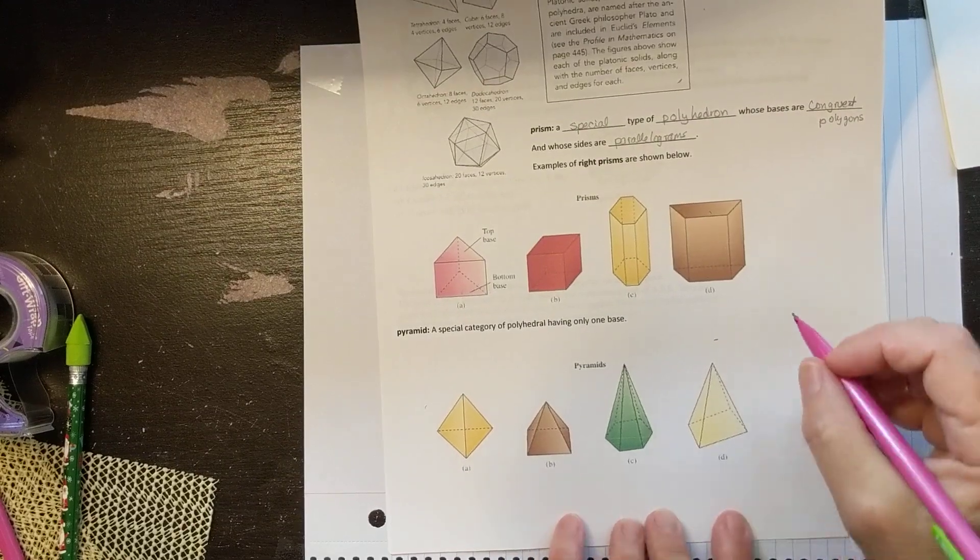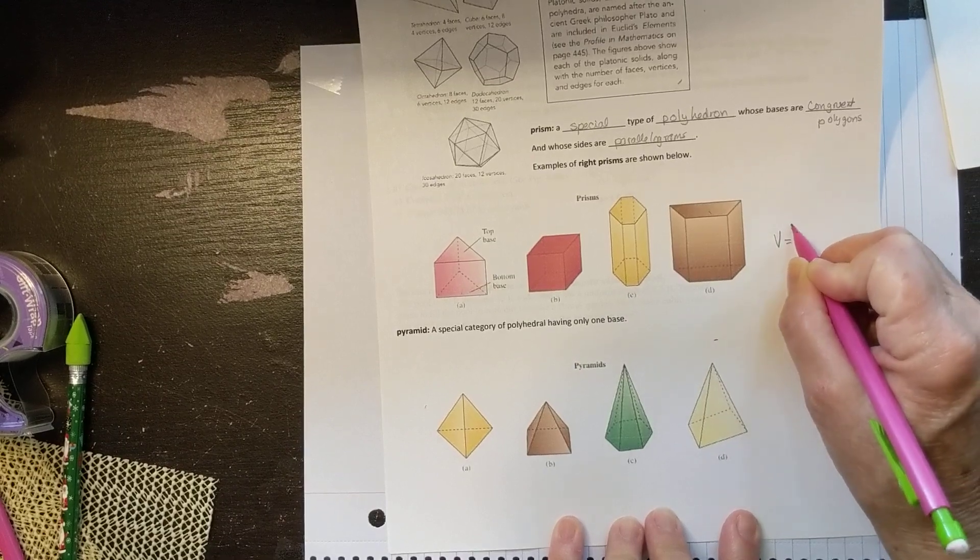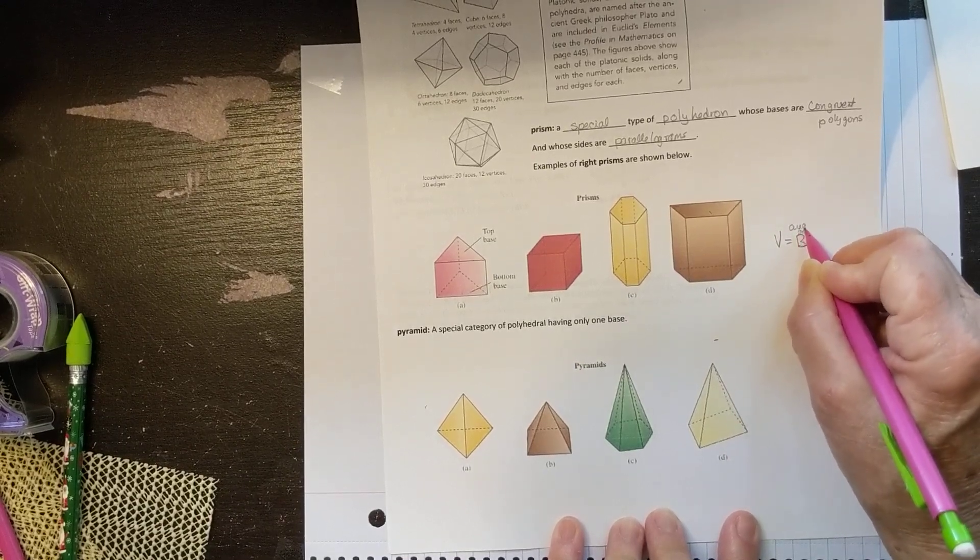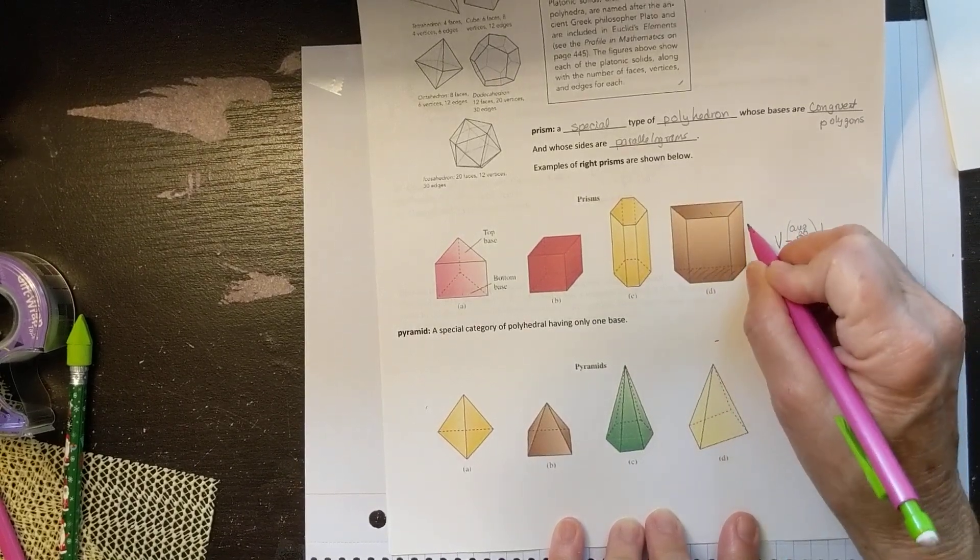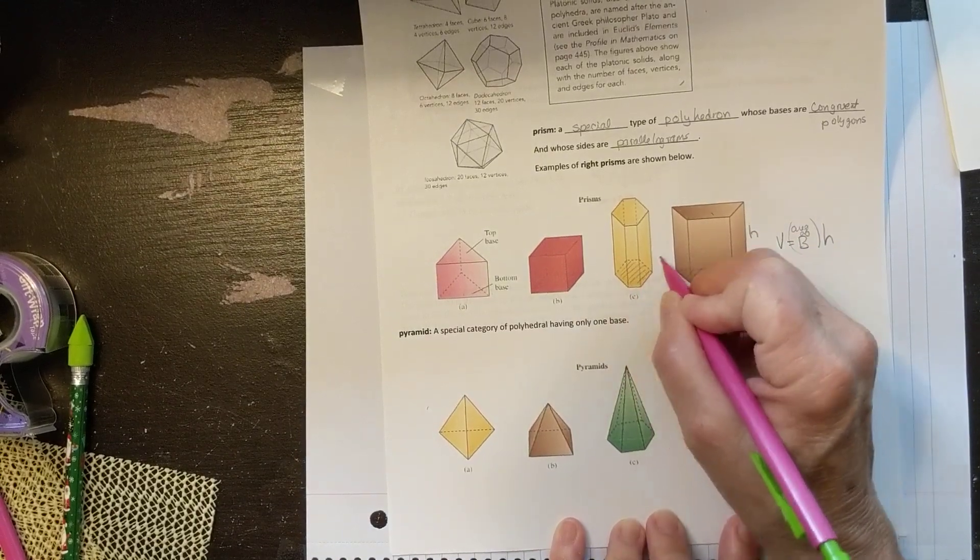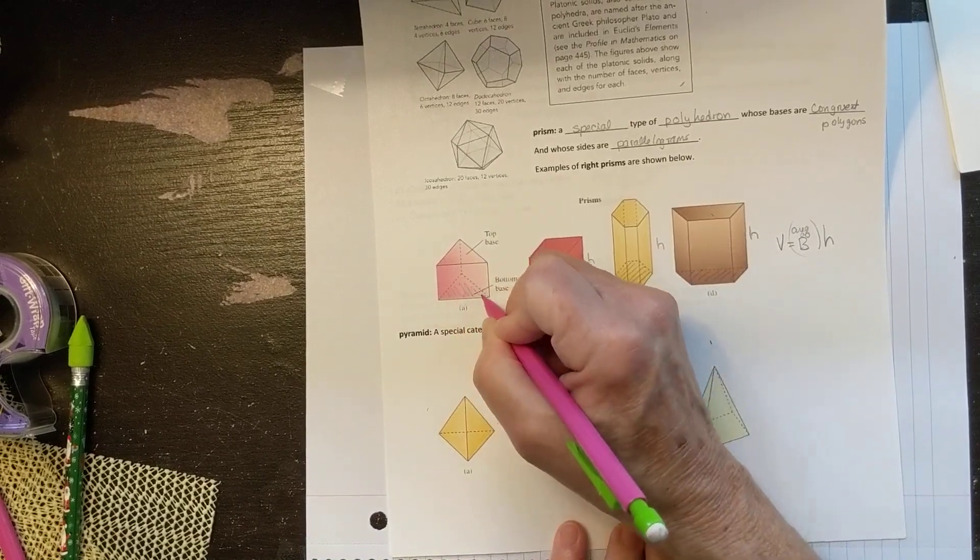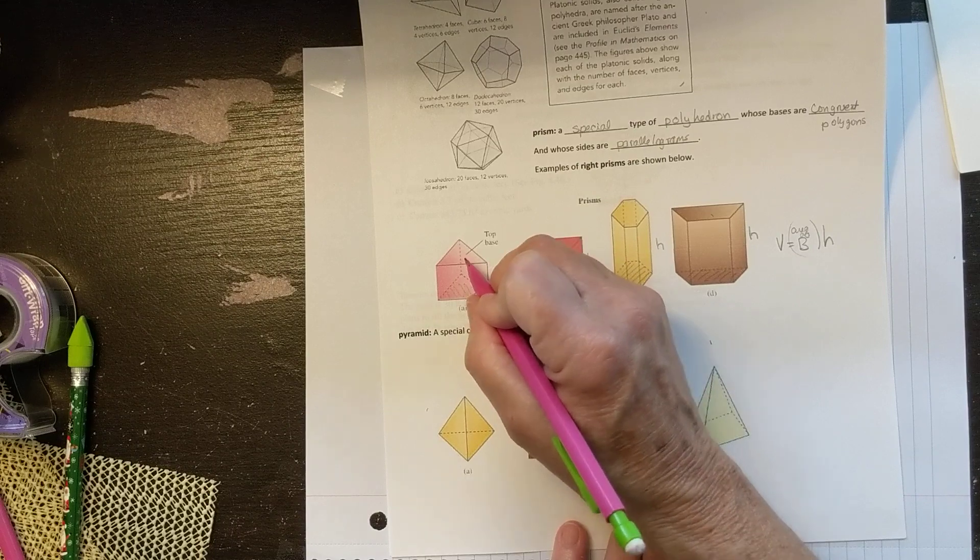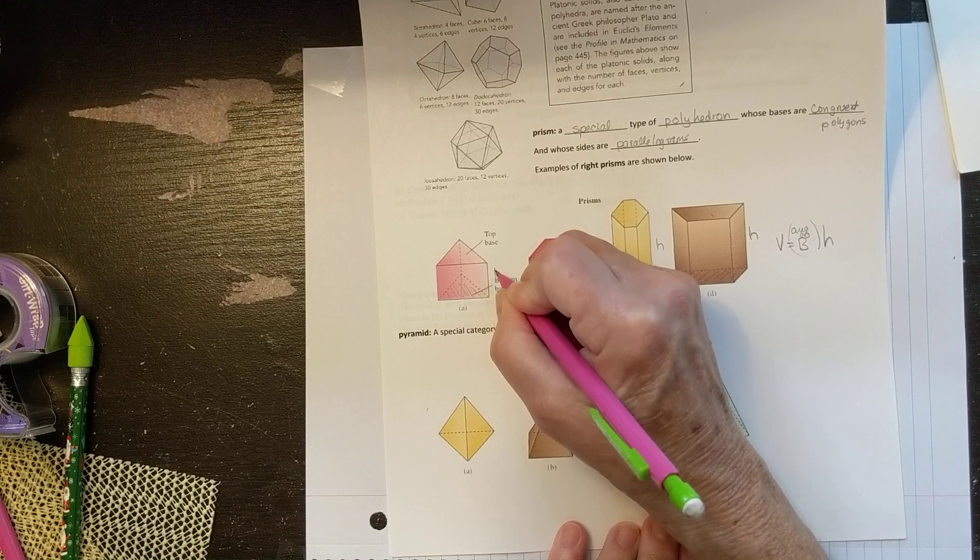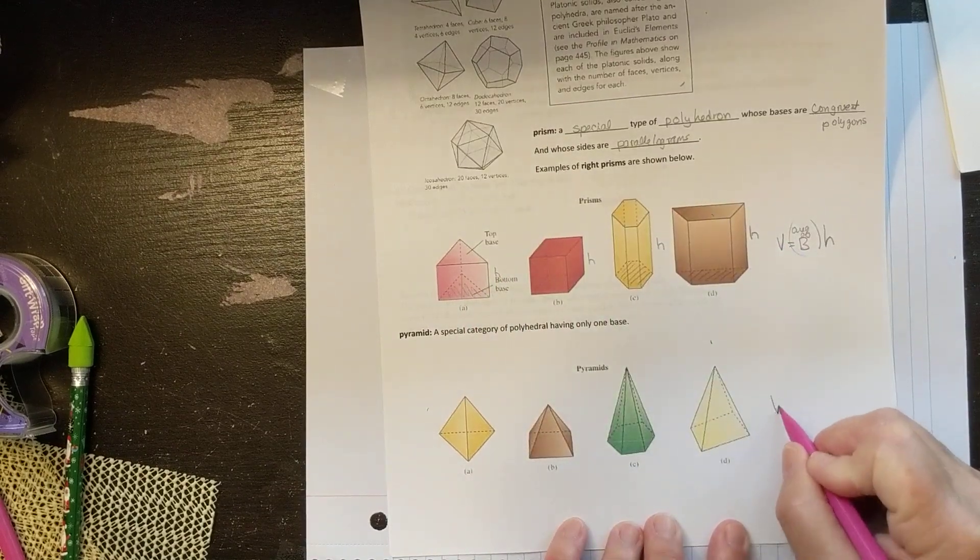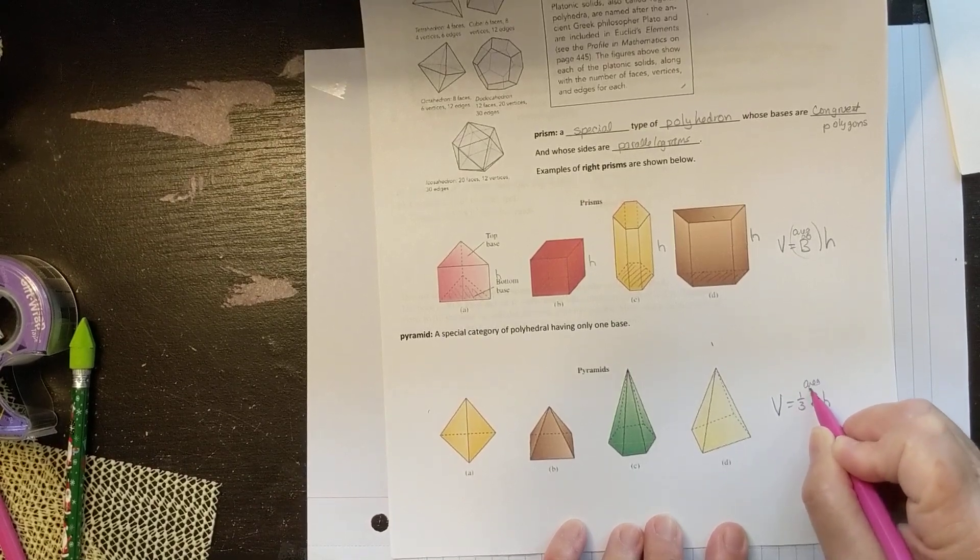Now the volume of a prism is equal to the area of the base times the height. So it would be the area of the base times however high it is. So whatever kind of base shape you have times the height. And the volume of a pyramid is one third the area of the base times the height. Now for just a couple of quick examples.